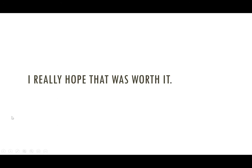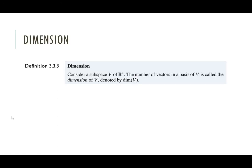If you're still with me, let's see where this is going. The whole point is so we can now define the dimension of a subspace. If we have some subspace V of R^n, the number of vectors in the basis of V is the dimension. So dim(V) means the number of vectors in a basis for V.